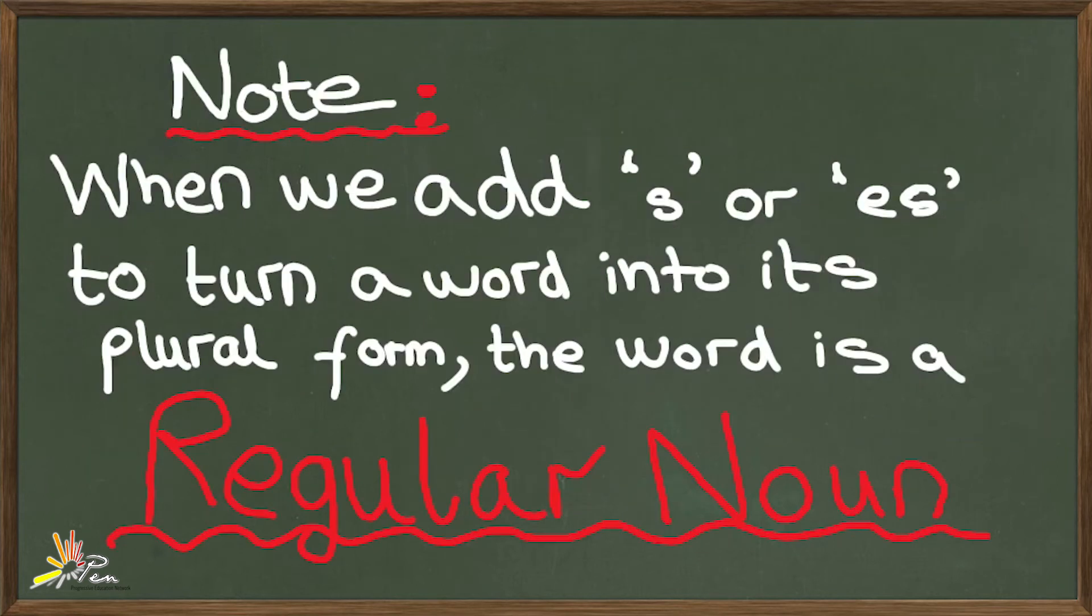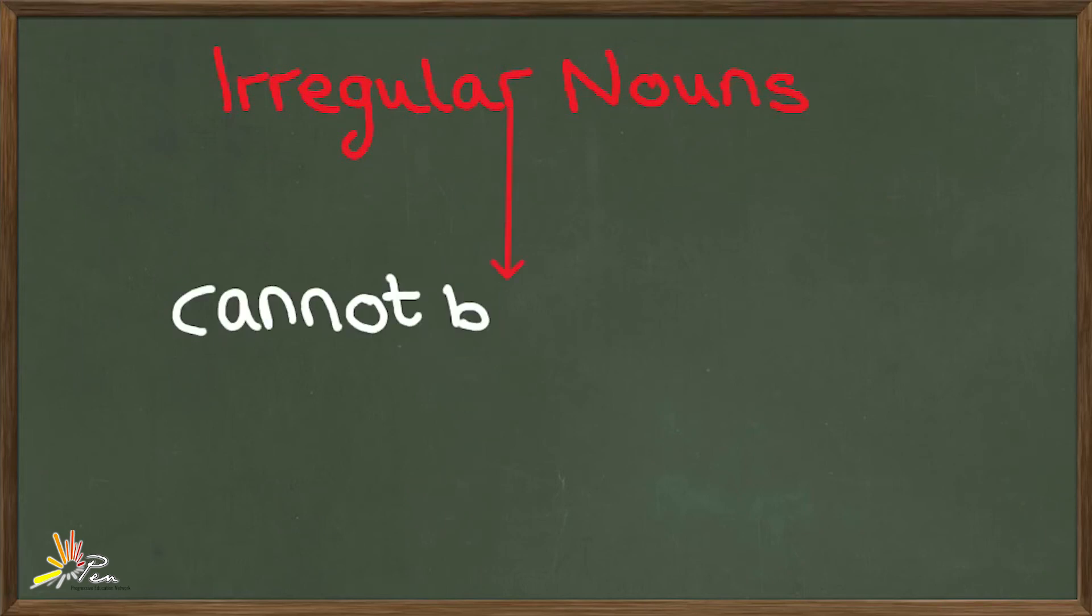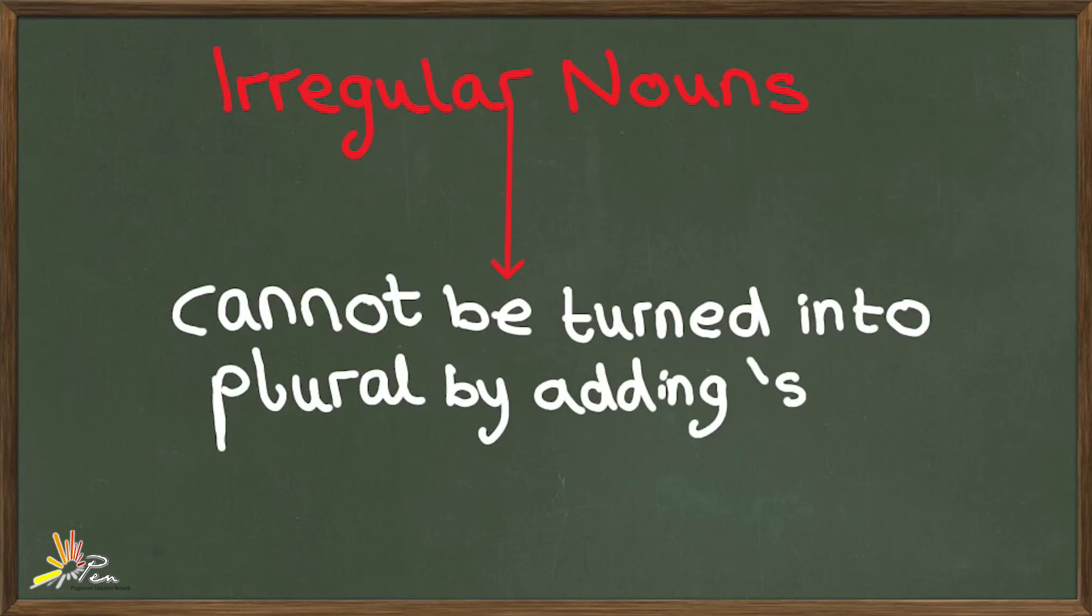When we add S or ES to turn a word into its plural form, the word is a regular noun. However, there also exist irregular nouns that help to make the English language more colorful. Irregular nouns cannot be turned into plural form by adding S or ES. The next rule is for irregular nouns.